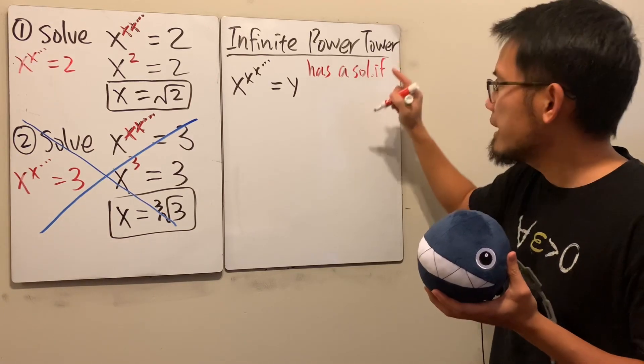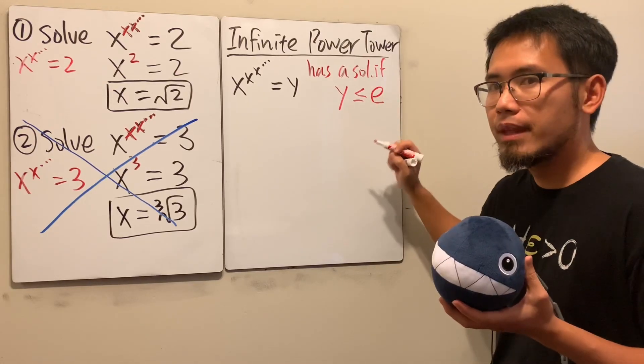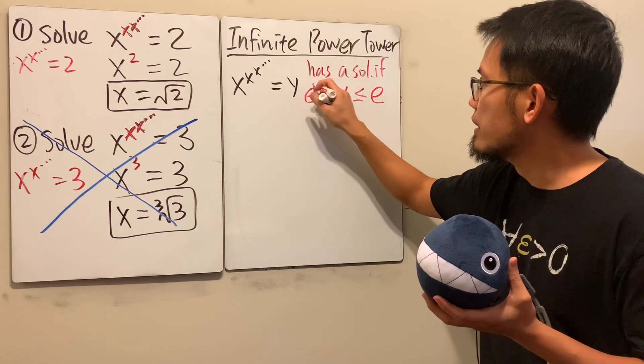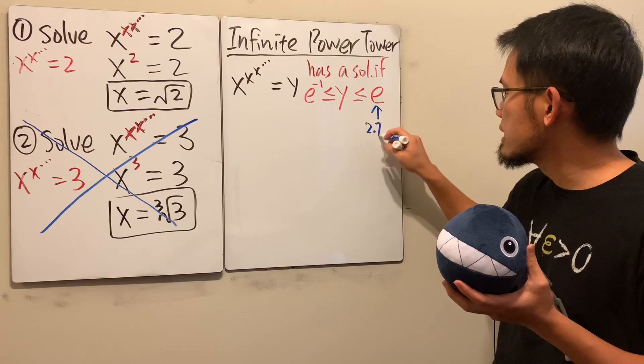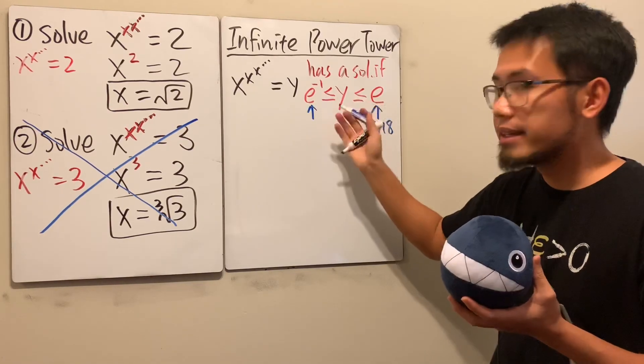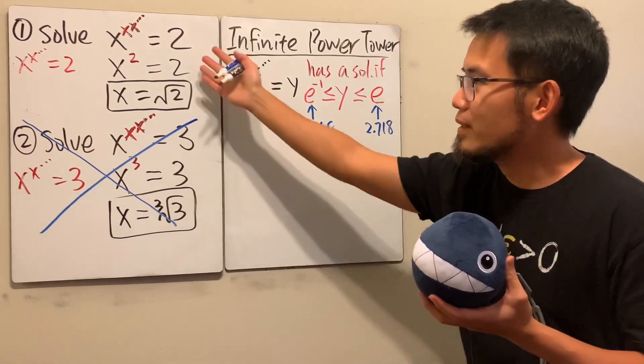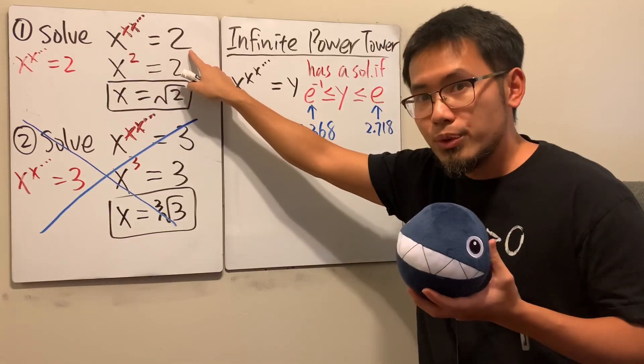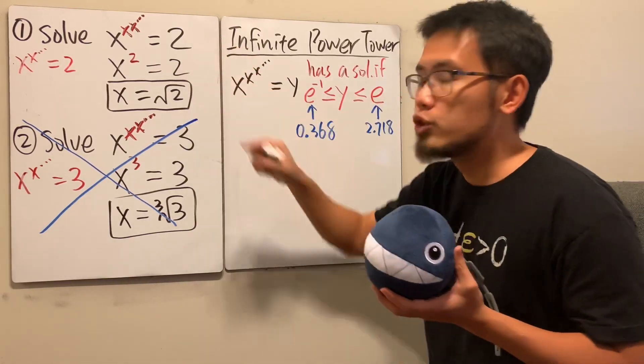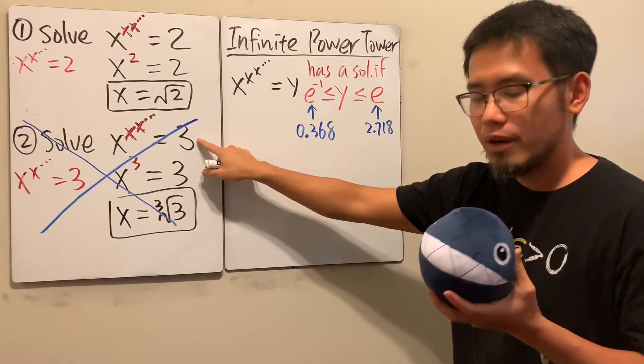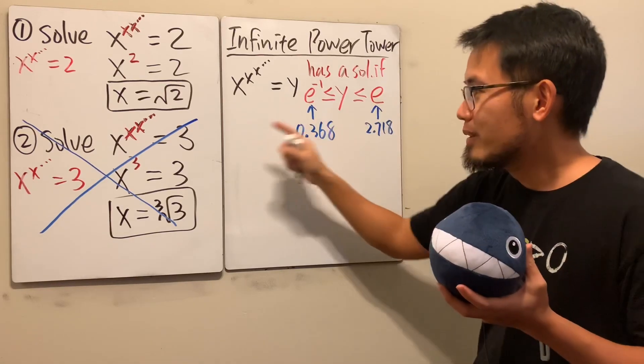This has a solution only if y is between two numbers. Y has to be less than or equal to the famous number e, and it has to be greater than or equal to e to the negative 1, which is 1 over e. This is approximately 2.718, and e to the negative 1 is approximately 0.368. Earlier, this equation was equal to 2, and 2 is indeed between this and that, so we know it does have a solution. However, when we have 3, unfortunately 3 is outside of this interval because 3 is bigger than e. So this actually does not have an answer at all.